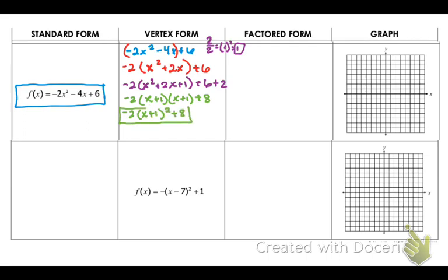So this here is your vertex form. You're going to want to identify your vertex and your axis of symmetry from here because that's going to help you with your graph. So my vertex is negative 1 and 8, and the axis of symmetry will be x equals negative 1. These are all part of the answers.